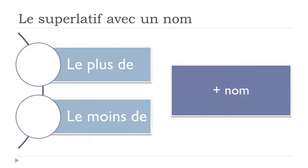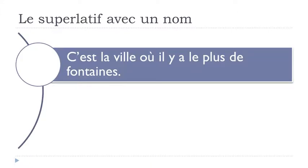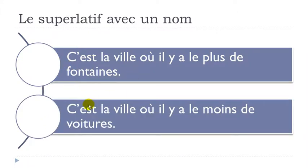After 'le plus de' or 'le moins de', you put your noun. Let's have a look at how to construct it: 'C'est la ville où il y a le plus de fontaines' — this is the town where there are the most fountains. And 'C'est la ville où il y a le moins de voitures' — the town with the fewest cars.